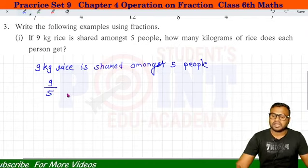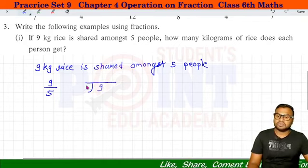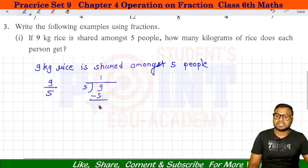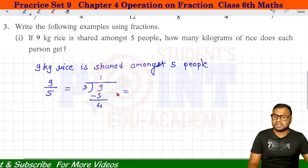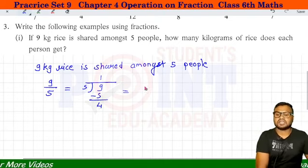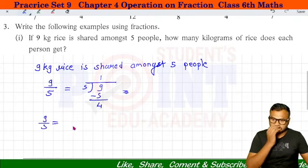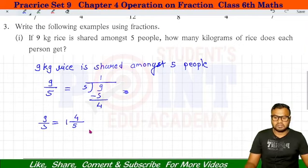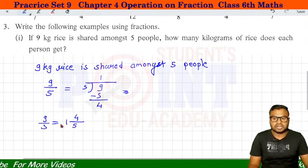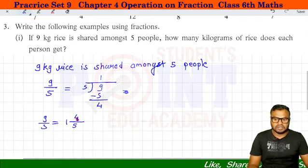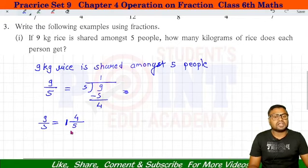Divide करेंगे 9 को 5 से — 5 ones a 5, बचा 4। इसे हम Mixed Fraction में convert करेंगे। 9 by 5 = 1 and 4 by 5। मतलब answer: 1 kg plus 4 by 5 part। जैसे 1 by 2 मतलब half होता है, यहाँ 1 kg और 4 by 5 part extra — मतलब total इतना equally distribute होने वाला है।